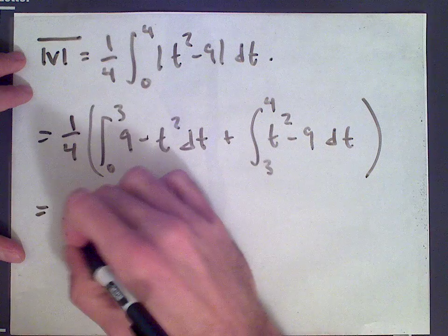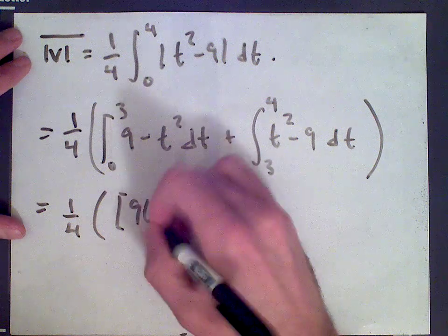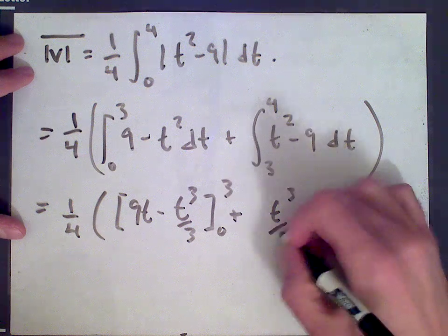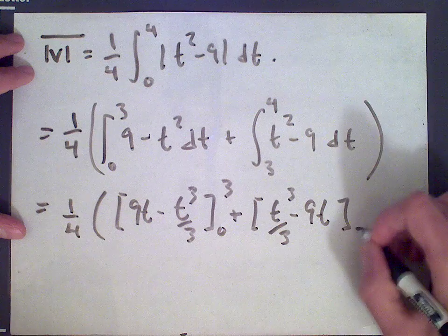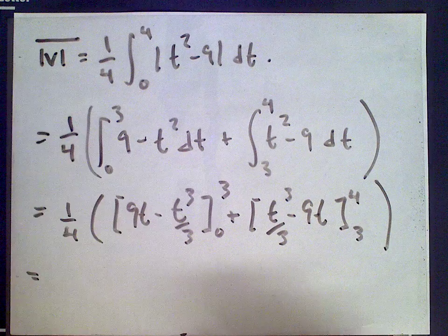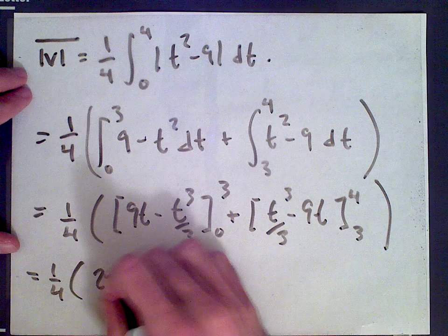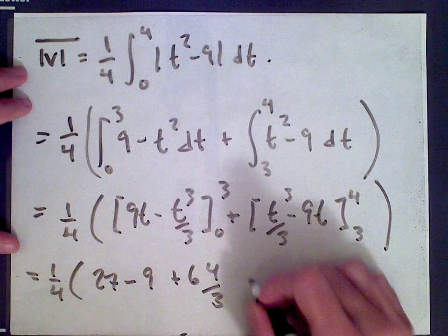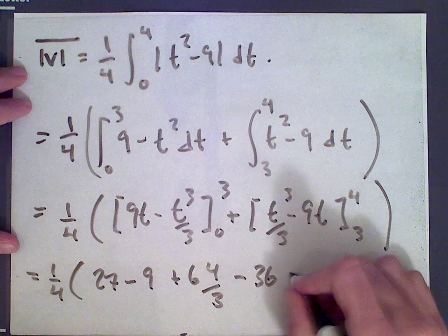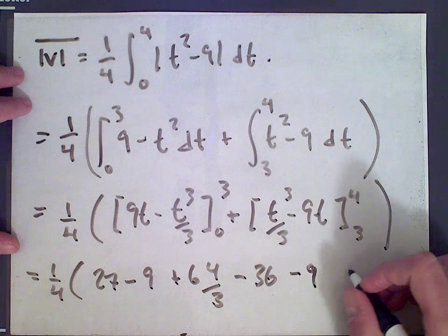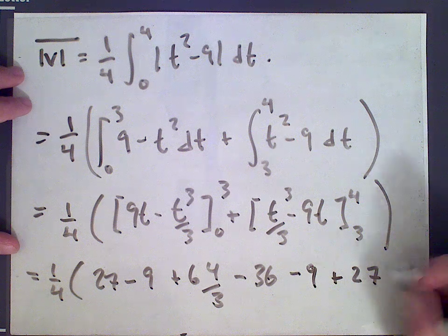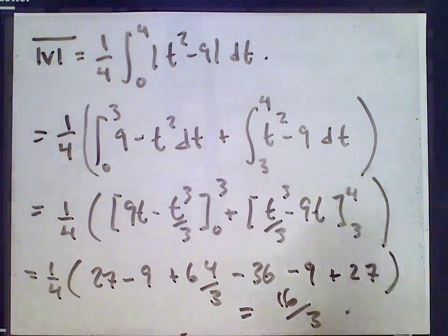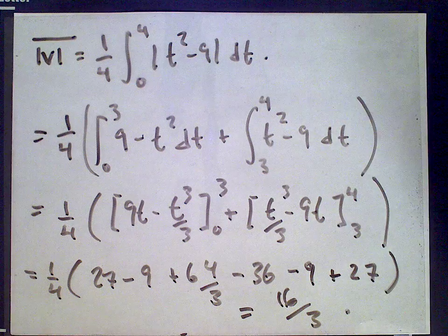We calculate those integrals: [9t - t³/3] evaluated from 0 to 3, plus [t³/3 - 9t] evaluated from 3 to 4. Plugging everything in we get 1/4 of (27 - 9 + 64/3 - 36 - 9 + 27), and that reduces to 16/3, which is positive as it should be. So the average speed on the interval from 0 to 4 is 16/3.